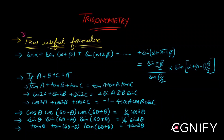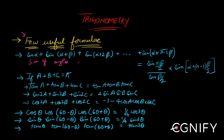I would like to end the first segment of trigonometry before we move on to trigonometric equations with some useful formulae. I won't be deriving these but I'll tell you how they come so you can do it as an exercise yourself. The first formula is the sum of sines of angles in AP — your angles are alpha, alpha plus beta, alpha plus two beta, and so on up to alpha plus n minus one beta.